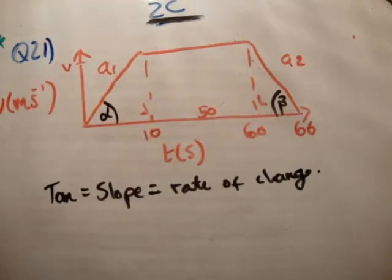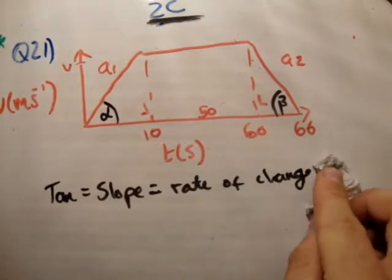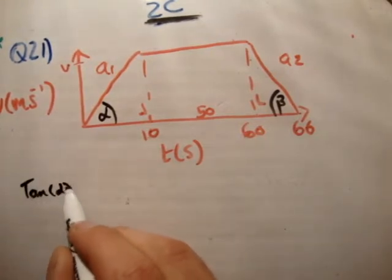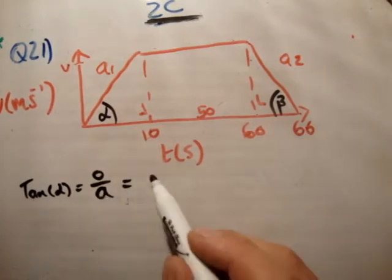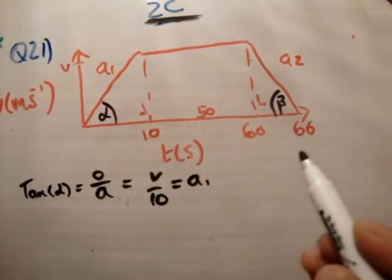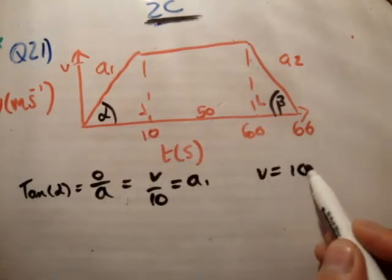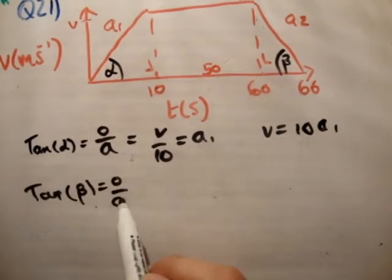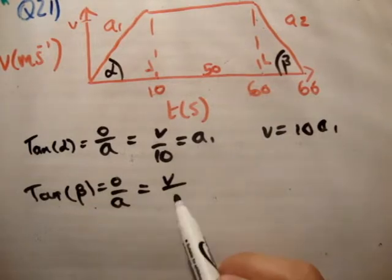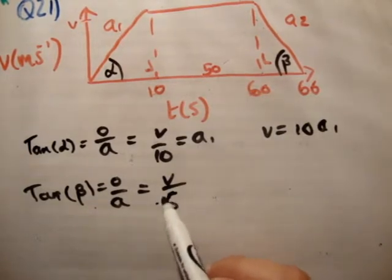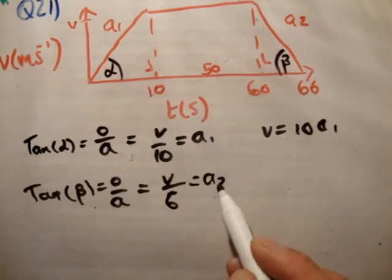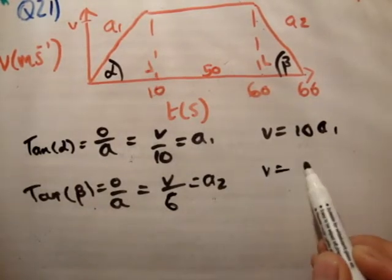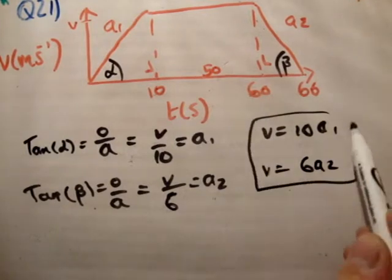So let's get tan alpha and let's get tan beta. So tan alpha is the opposite over the adjacent is equal to V over 10 is equal to A1. Therefore, V is equal to 10A1. And tan beta is equal to the opposite over adjacent is equal to V over 6 in this case. Now remember, it's just the length, so it's not negative 6, it's just 6. It's equal to A2. So therefore, V is equal to 6A2.